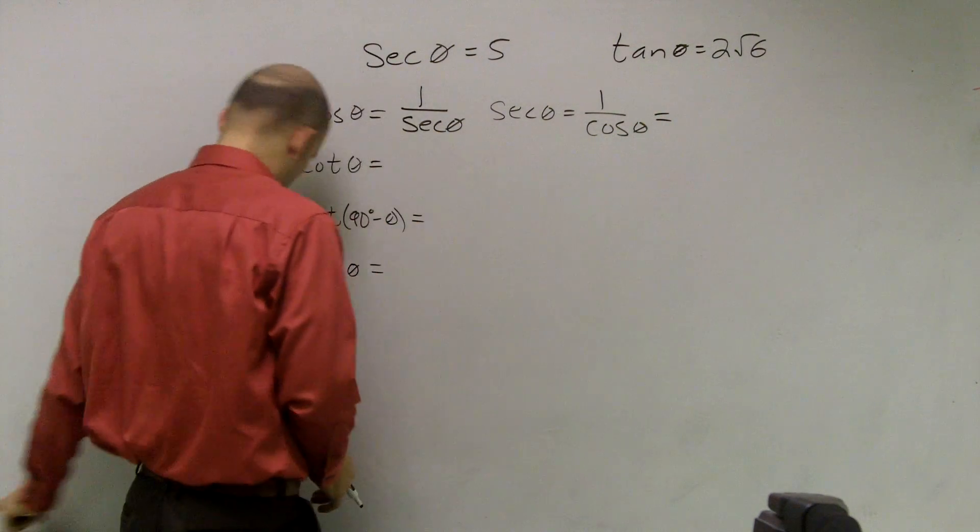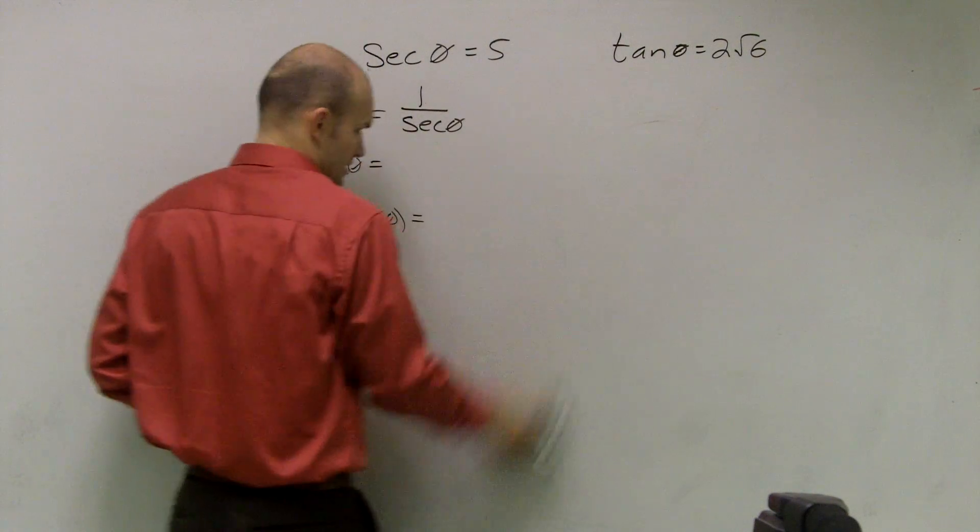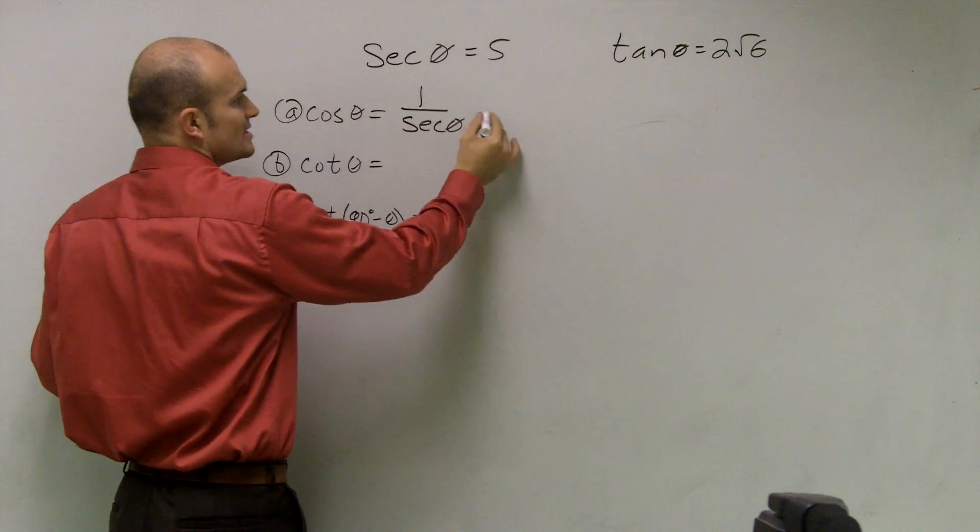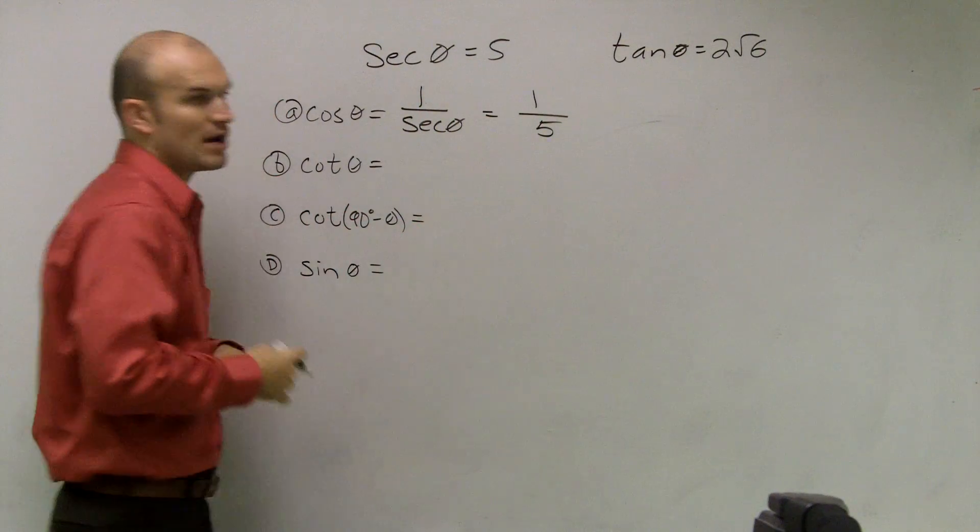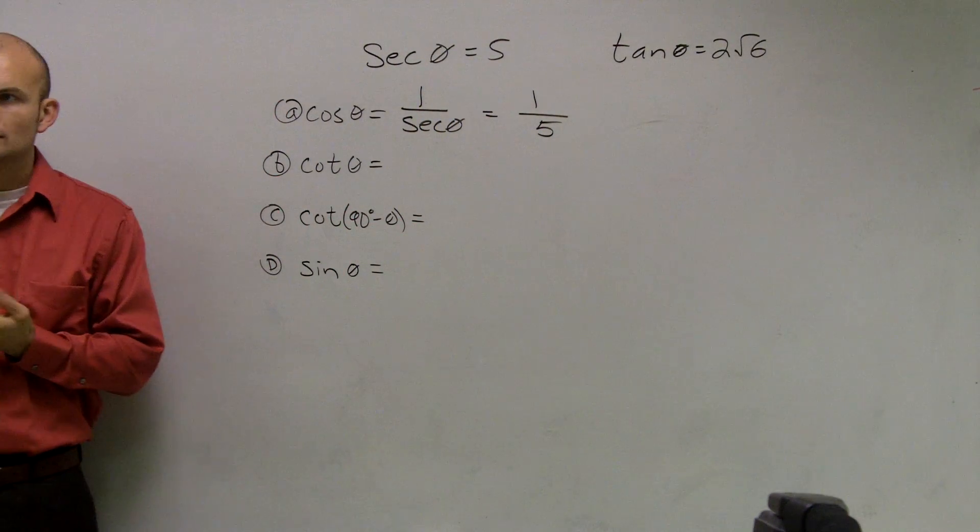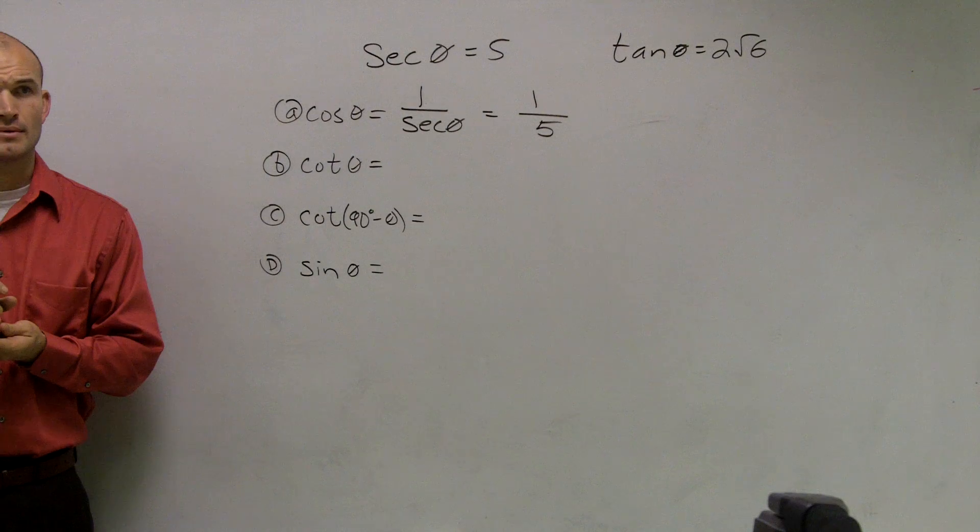So cosine is just 1 over secant of theta, which in this problem is 5. Does that make sense?